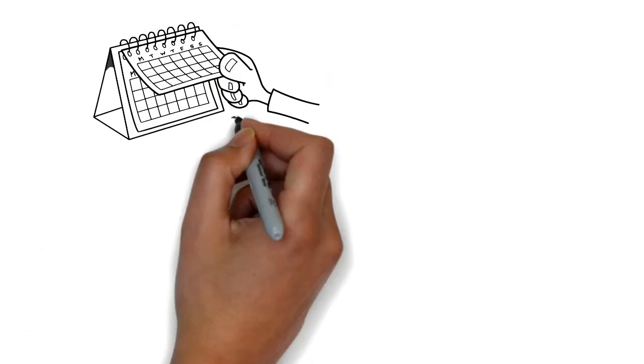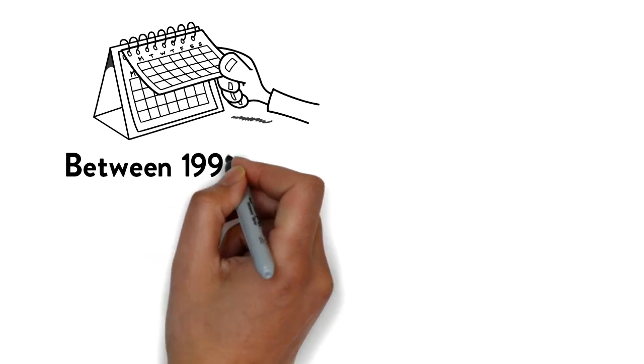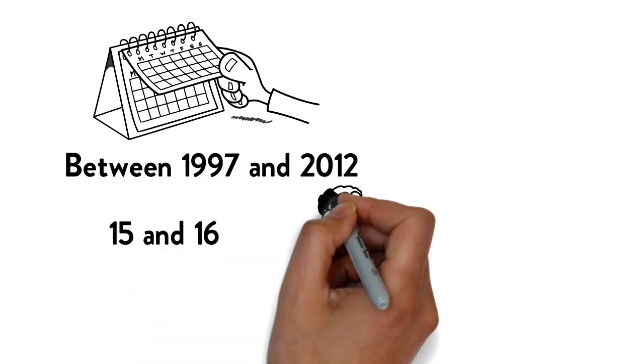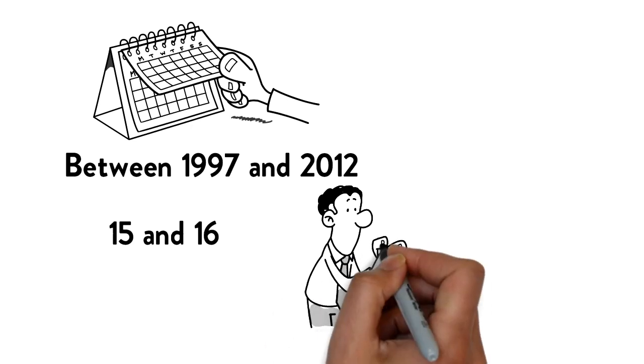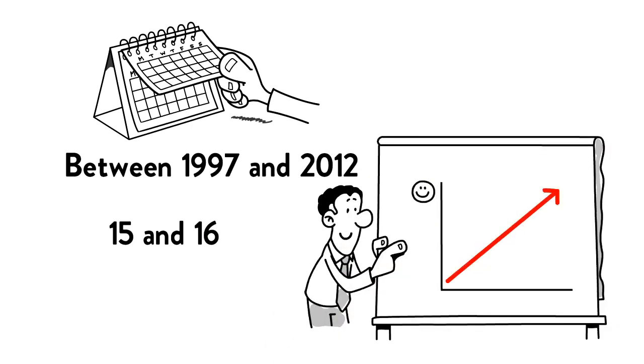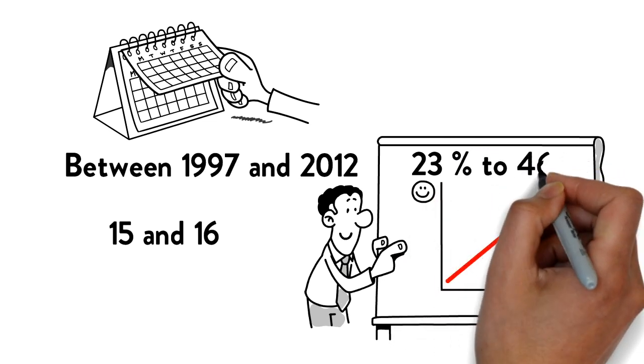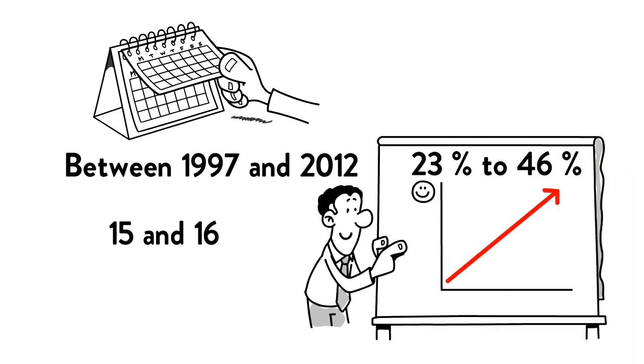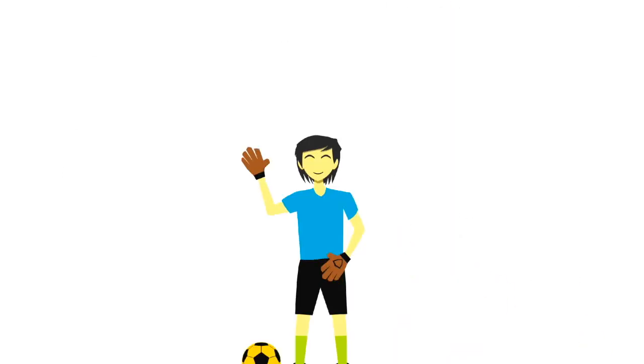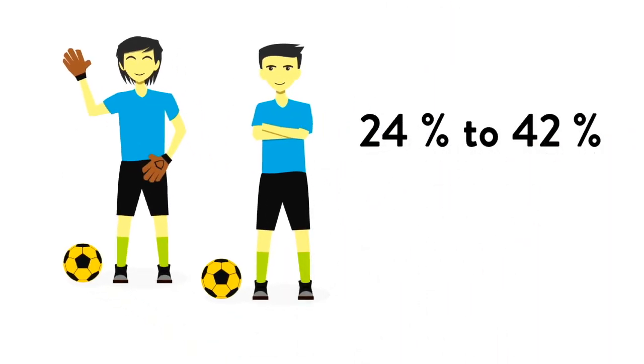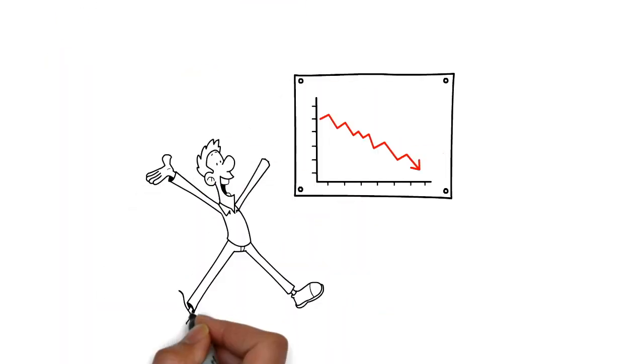Between 1997 and 2012, the percentage of kids aged 15 and 16 who reported often or almost always spending time with their parents on weekdays doubled from 23% to 46%. And the percentage who participated in organised sports at least four times a week increased from 24% to 42%. Meanwhile, cigarette smoking, drinking and cannabis use in this age group plummeted.